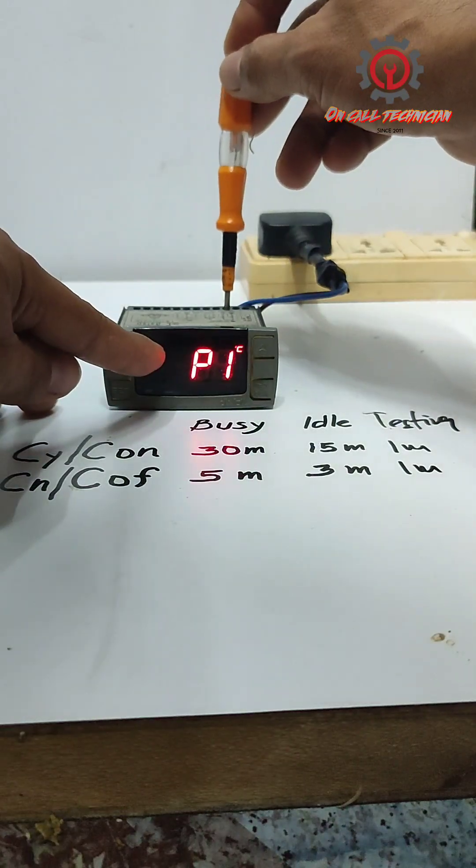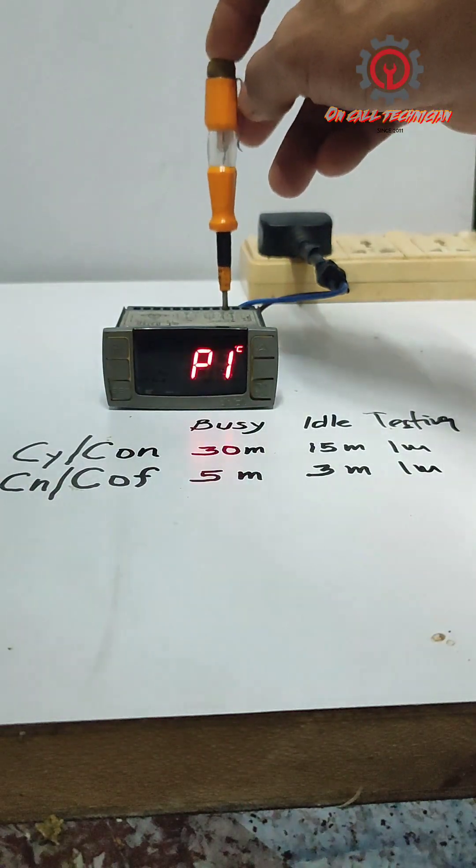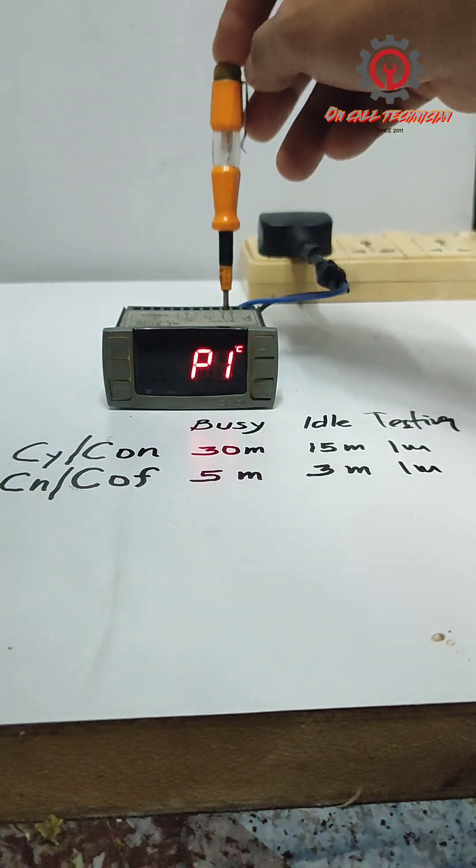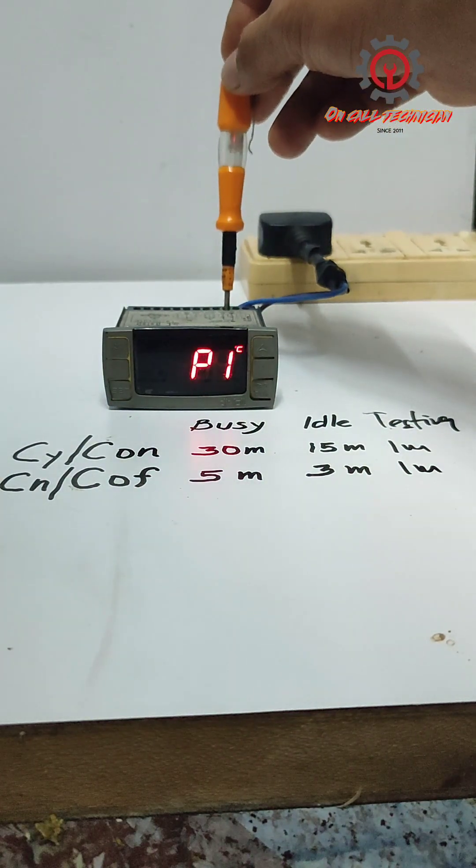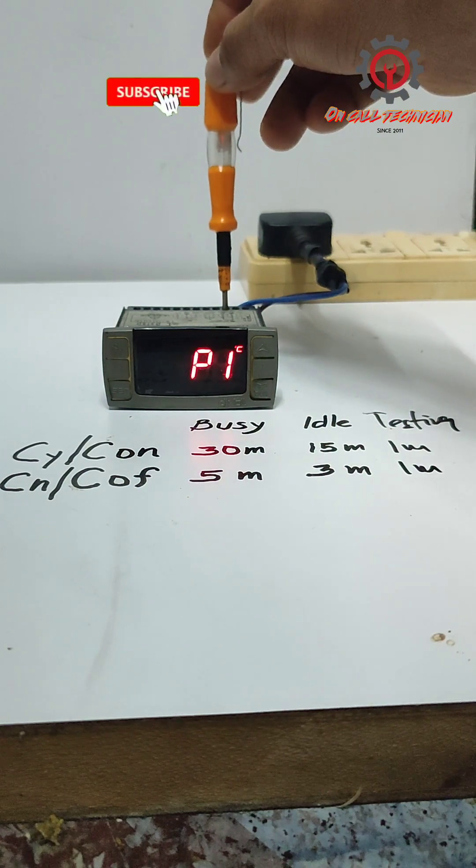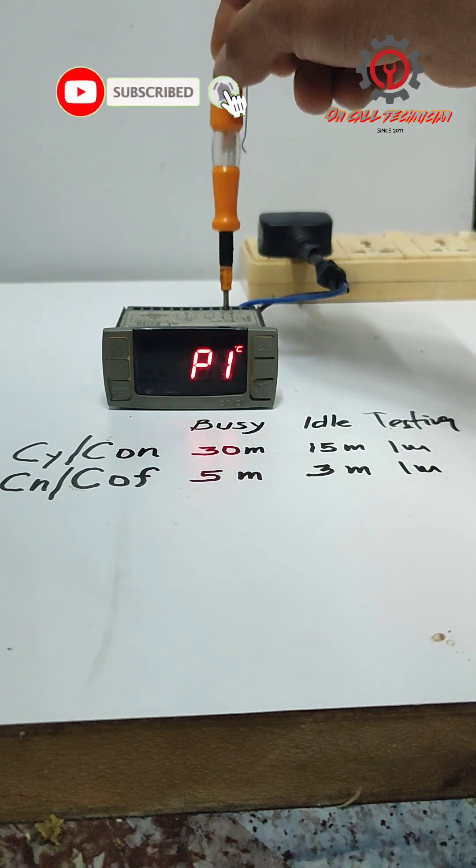It will appear again once the one minute duration I put in the CY or C on. So the Dixell cut off kahit wala siyang sensor, and the parameter is the CN or C off.